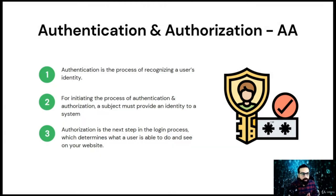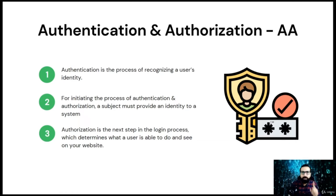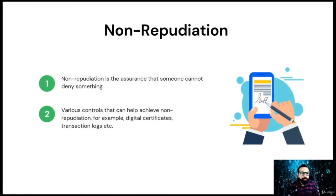Upon successful authorization, an authenticated identity can request access to an object, provided it has the necessary rights and privileges. For example, the building has various files but you are authorized to access only one file.